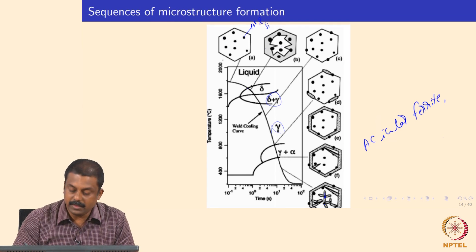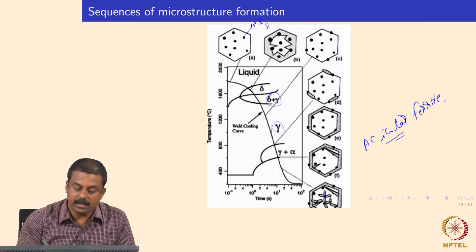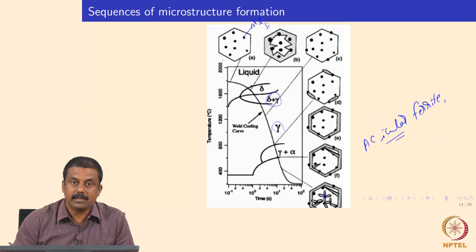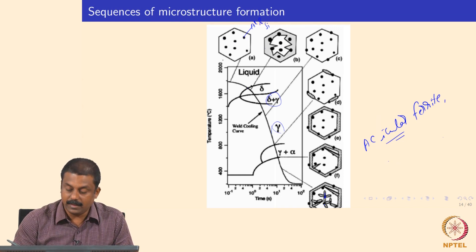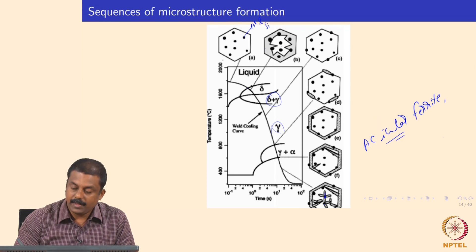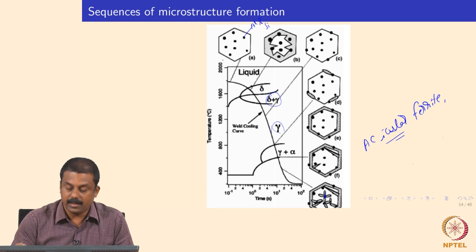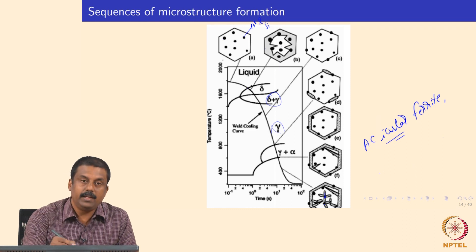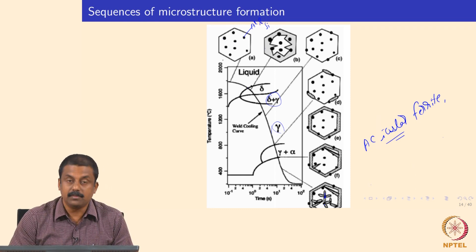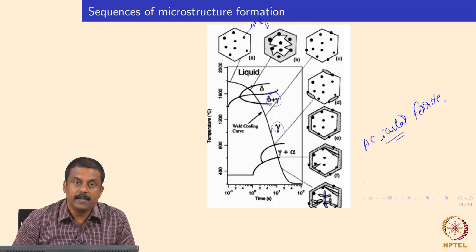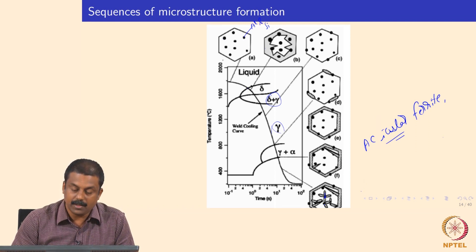If you carefully control the inclusion density, size, and volume fraction, you may also promote the nucleation of acicular ferrite when the austenite is cooling to room temperature. The nucleation of acicular ferrite is seen as advantageous because acicular ferrite gives the best toughened microstructure in terms of properties. Having an acicular ferritic microstructure is beneficial instead of a fully martensitic microstructure. By carefully manipulating the size and volume fraction, you can change the microstructure formation when austenite transforms to low-temperature products during cooling.